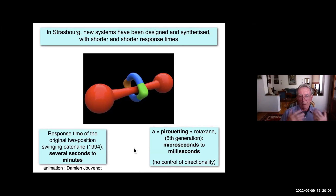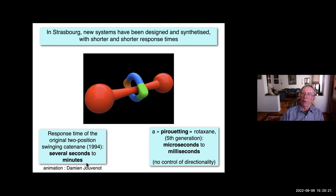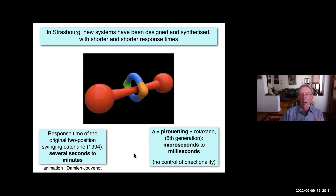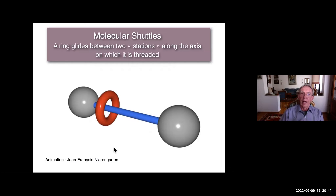In our group we were not satisfied with systems moving so slowly. We spent about 12 years trying to improve the systems, and within that time we could go from seconds to minutes for the very first system, down to microseconds to milliseconds. For a pirouetting catenane as shown here, we could achieve motion within microseconds — a nice improvement.